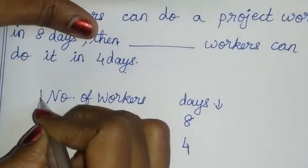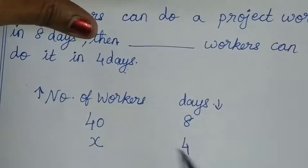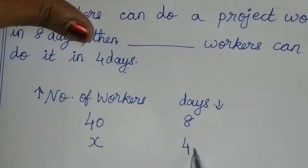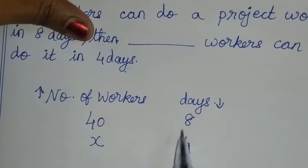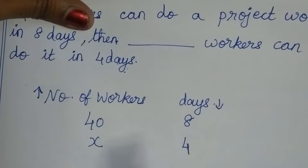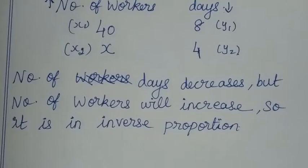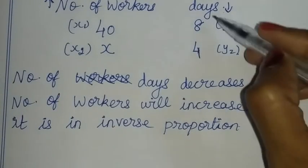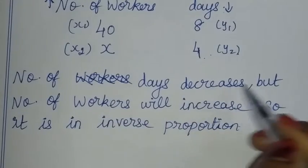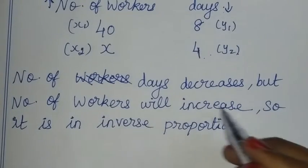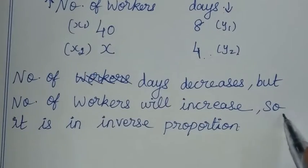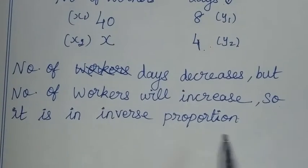Number of workers will increase. If the workers are doing the same work, it can be done in less time. So this will increase. Number of days decreases, but number of workers will increase. So it is inverse proportion.